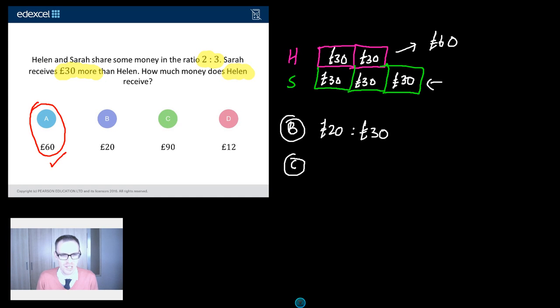OK, what about C, 90 quid? What's 90 quid got to do with this question? Well, 90 pounds is the amount that lucky Sarah gets. She gets three parts. So that is Sarah's money. So you'd be flipping annoyed if you answered that one, right? You've done all the hard work, but you've read the wrong person that the question is asking you.